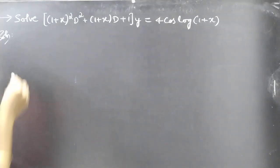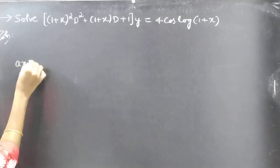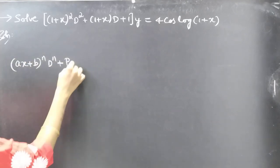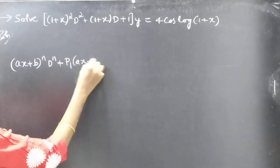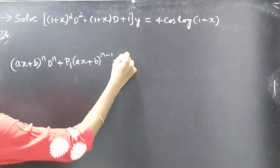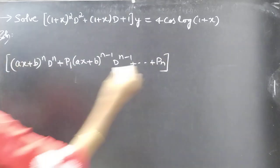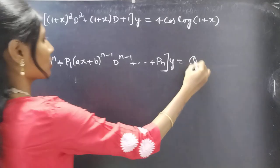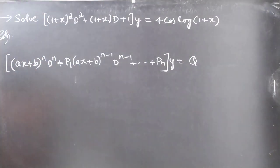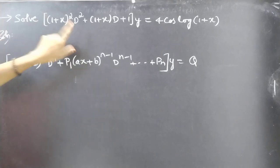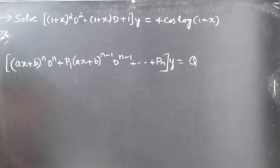The given differential equation is of the form (ax+b)ⁿ Dⁿ + p₁(ax+b)ⁿ⁻¹ Dⁿ⁻¹ + … + pₙ into y equal to some function of x. Since this equation is of this form, we call this equation a Legendre's equation.